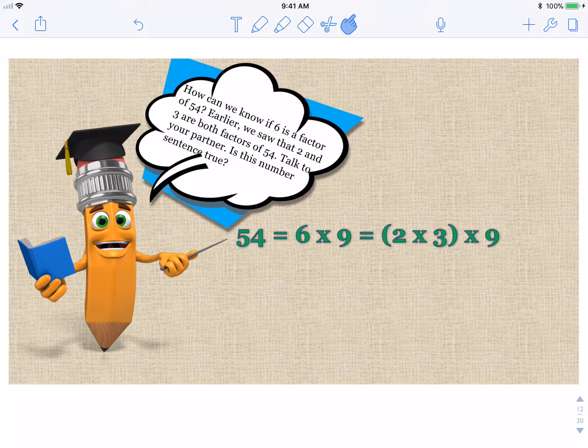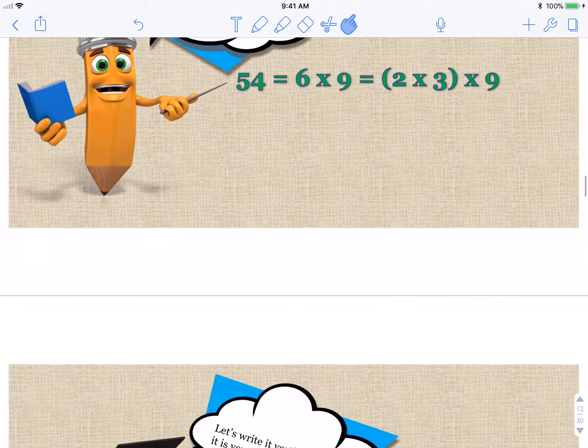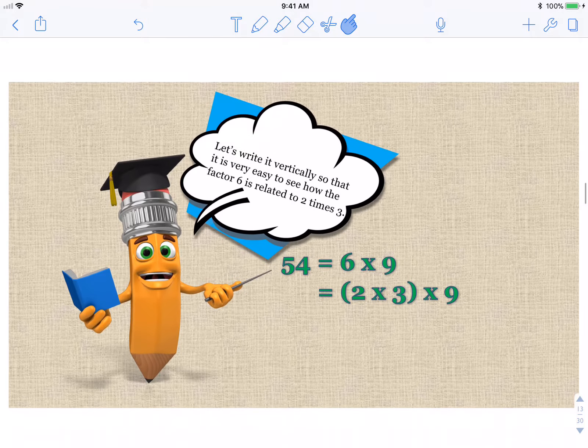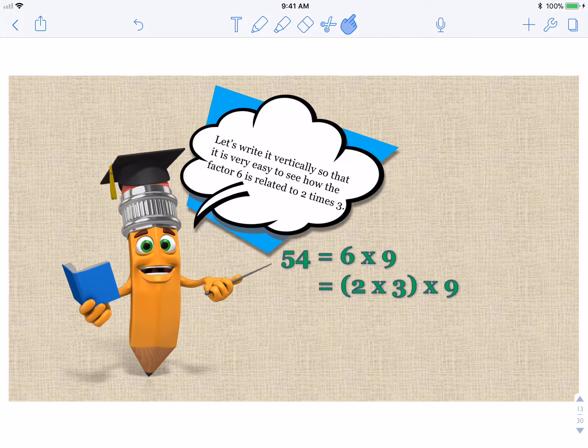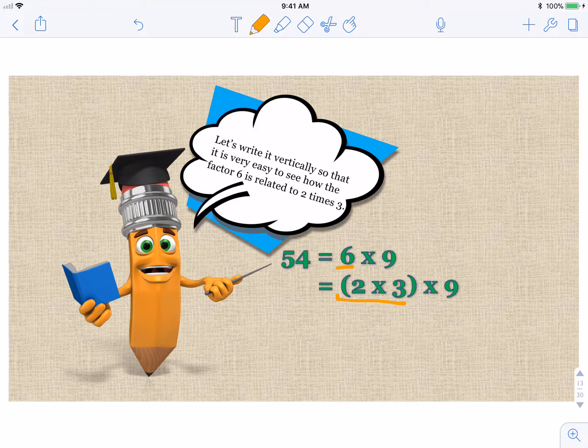How can we know if 6 is a factor of 54? Earlier, we saw that 2 and 3 are both factors of 54. Talk to your partner. Is this number sentence true? 54 equals 6 times 9. Is this sentence true? So pause, talk to your partners about it, and proceed when you're ready.